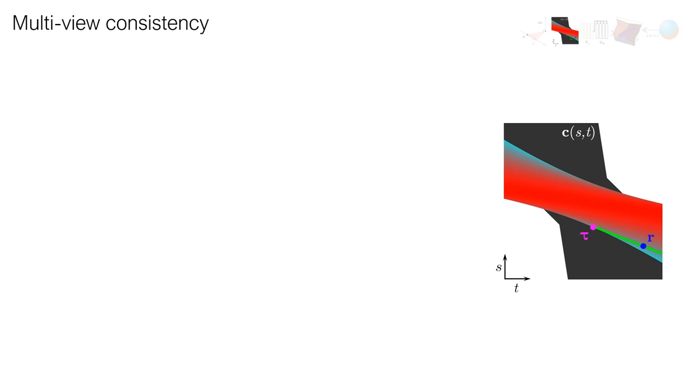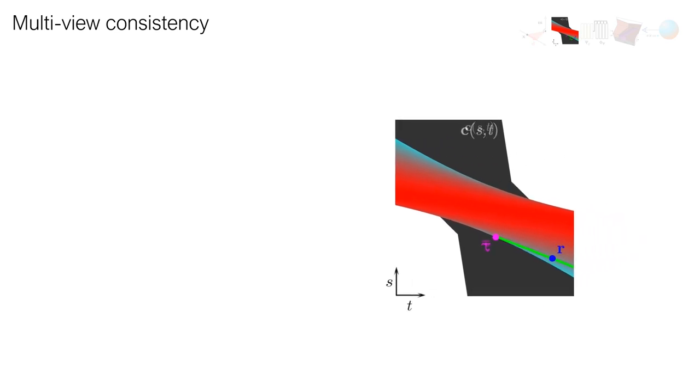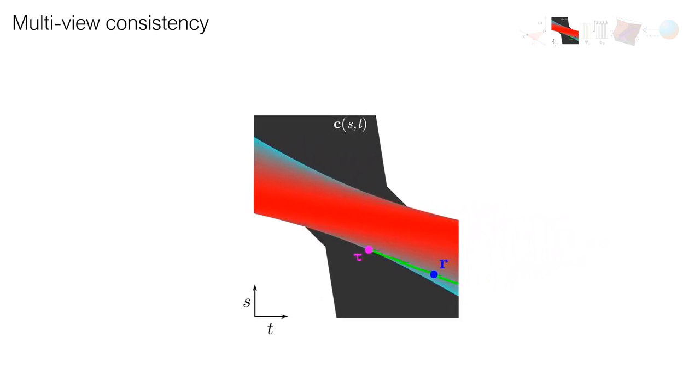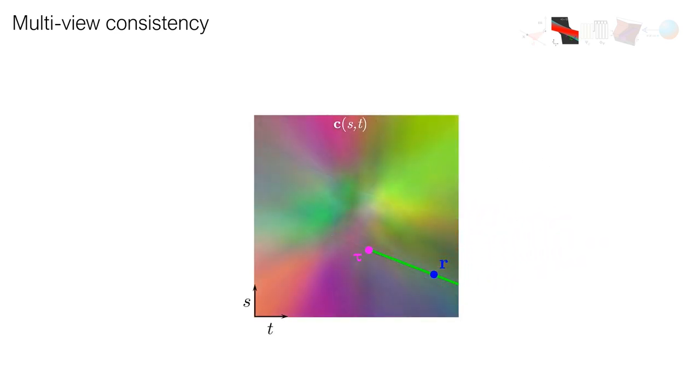However, a general LFN has the capacity to represent lightfields whose epipolar images do not have any of the structure of lightfields of real scenes. For the randomly initialized LFN above, for example, there are no lines along which the color is constant, because this represents a multiview inconsistent lightfield which does not arise from a 3D scene.